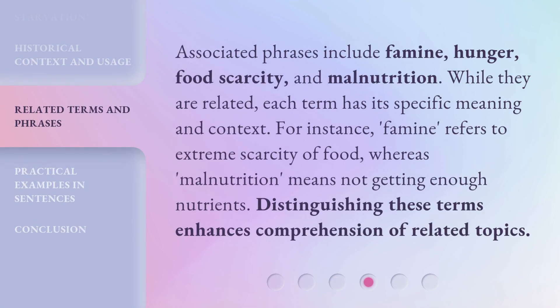Associated phrases include famine, hunger, food scarcity, and malnutrition. While they are related, each term has its specific meaning and context. For instance, famine refers to extreme scarcity of food, whereas malnutrition means not getting enough nutrients. Distinguishing these terms enhances comprehension of related topics.